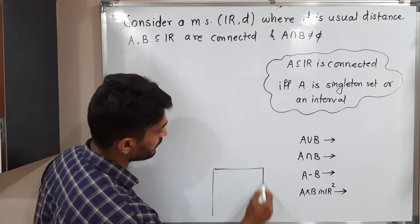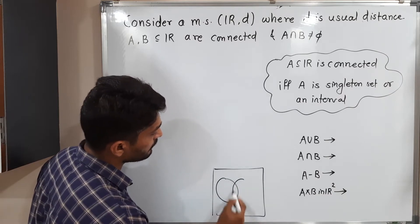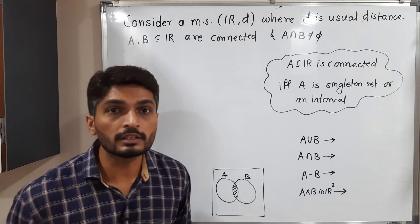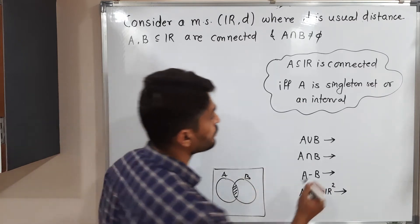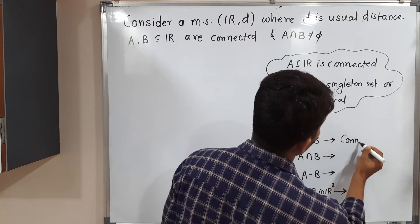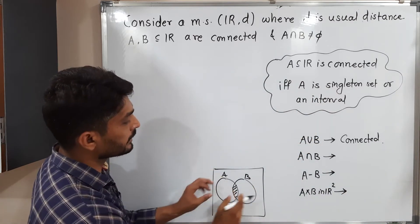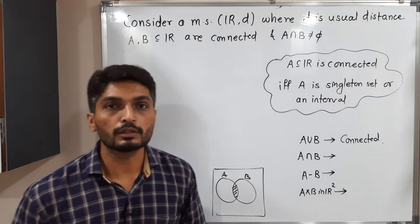I have already told you that if you have a metric space and if we have two sets A and B connected and intersection is non-empty, then union is also connected. So A union B is connected since they have provided all the information. Since A and B both are connected, intersection is non-empty, so A union B is also connected.